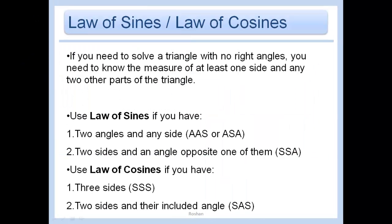Just a review of the same slide that we saw yesterday: the law of sines and the law of cosines. If we're dealing with a triangle that is not a right triangle, and we need to know the measure of some other angles or sides, that is when the law of sines and the law of cosines come into play. We use the law of sines in the angle-angle-side and angle-side-angle cases, but in the side-side-angle case we saw the ambiguous case where we have either 0, 1, or 2 triangles to check for.